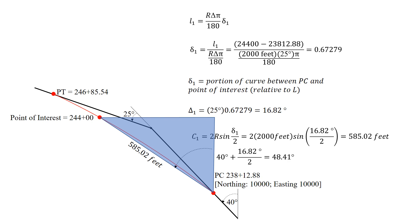We can now find the angle of turn. So for this angle, it's 40 degrees. That's the angle of our original bearing plus half of that angle to our point of interest, the 16.82 degrees divided by 2. So we come up with that angle of 48.41 degrees.